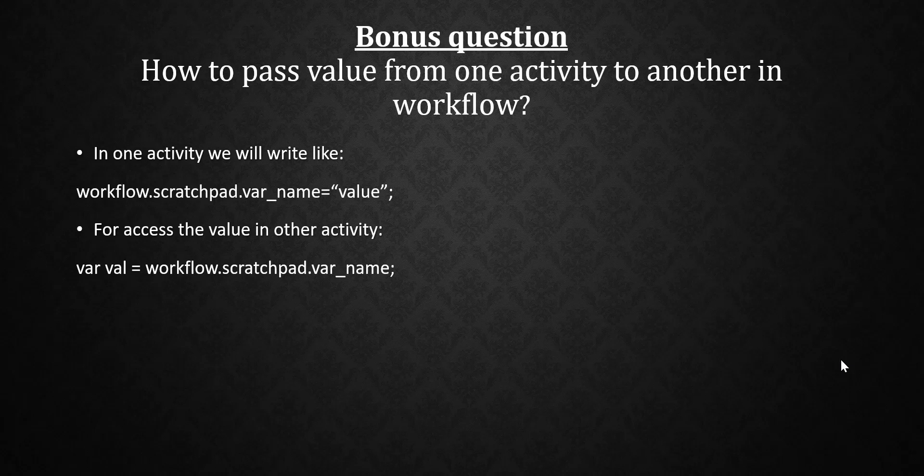Now a bonus question: how do you pass a value from one activity to another activity in a workflow? Generally you can say we use workflow.scratchpad.variableName. But if they ask more deeply about the syntax: in one activity you set workflow.scratchpad.variableName = value, and for accessing that variable in another activity, you create another variable and write workflow.scratchpad.variableName to retrieve it.